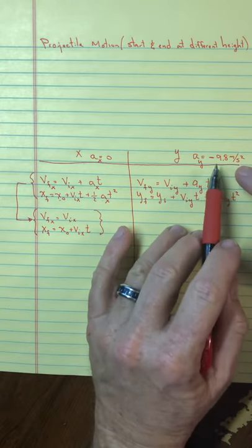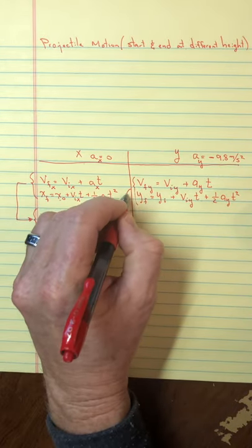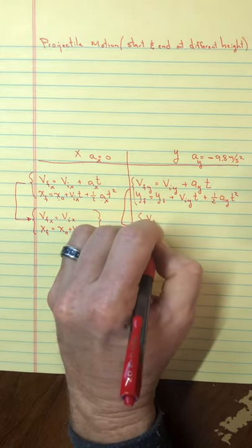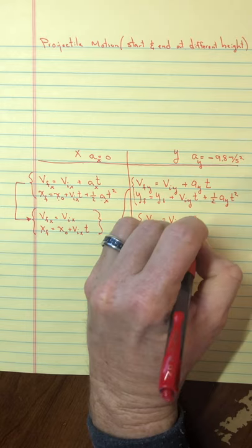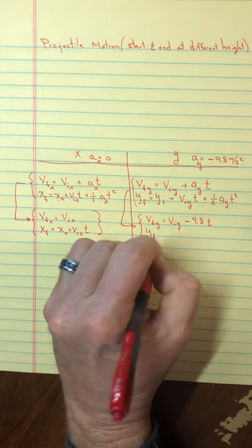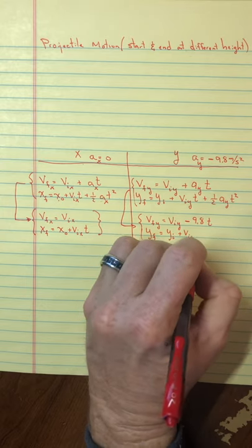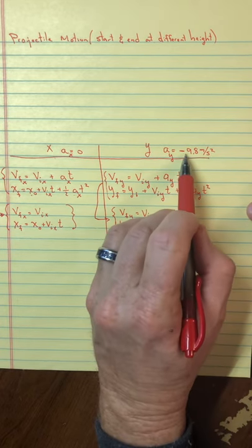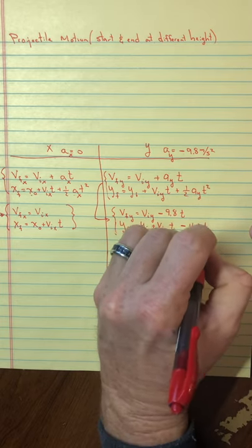But there is a number here — there's a negative 9.8 — whereas in the x direction it was zero. So applying these two equations for this case, the final velocity in the y direction equals the initial velocity in the y direction minus 9.8t. And the other equation becomes: y final equals the initial position plus the initial velocity in the y times time minus 4.9t squared, since half of 9.8 is 4.9.